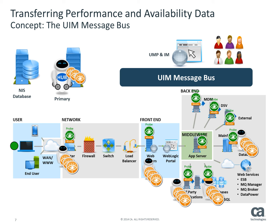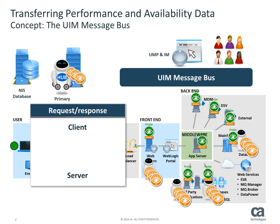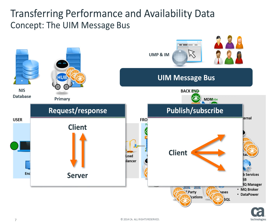The message flow is based on request-response and publish-subscribe models. Request-response is the standard way of communicating over the network: a client issues a request to a server and the server responds to the request. Publish-subscribe allows clients to send data — such as alerts, performance data, or messages targeted for gateway servers — without a designated receiver. It also allows clients to select messages based on subject.